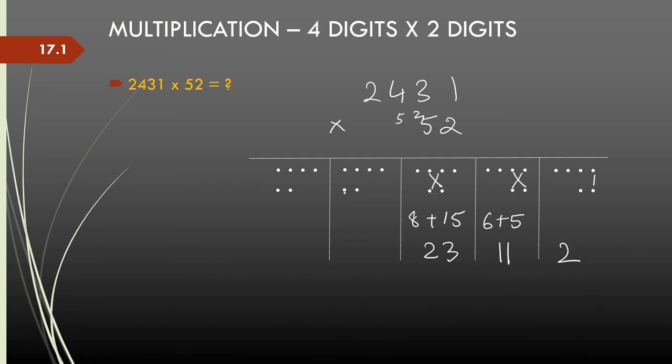And then the multiplicand moves to the left again. And then we have a crisscross, which is 2 times 2, 4 plus 5 times 4, 20, that is 24. And then the last part is the product of the digits 2 and 5, which is 10.